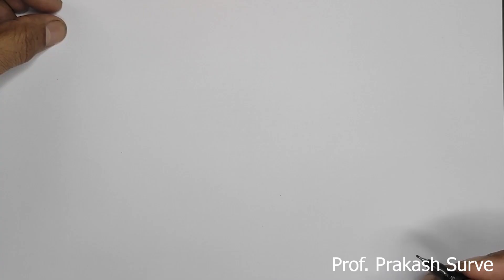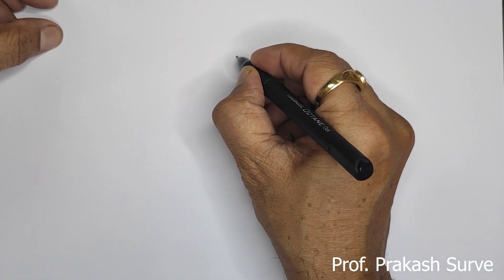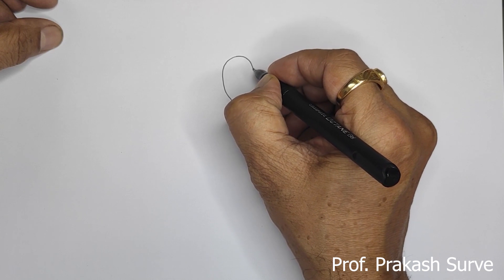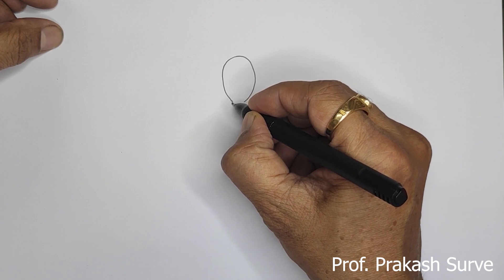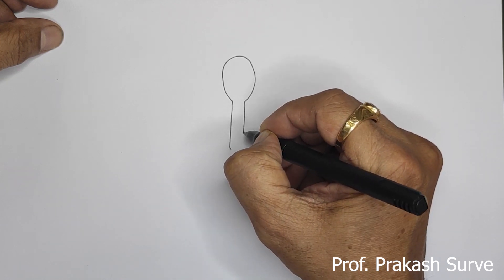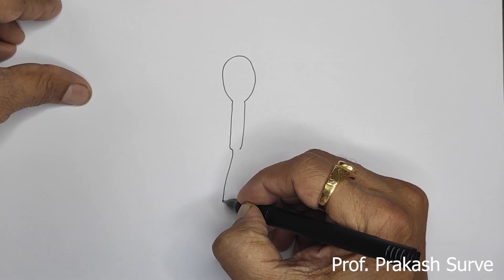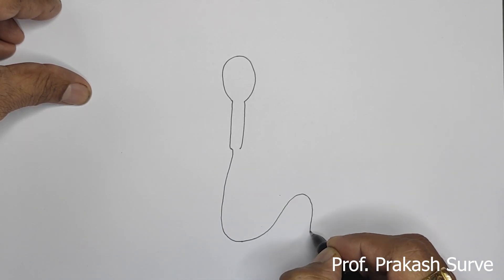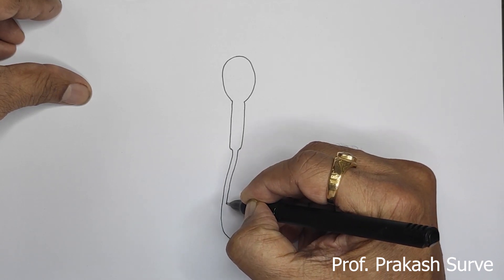Welcome dear students. Today we will see about the structure of sperm — a very easy diagram. First we will draw the head of the sperm, then afterwards the middle piece, and then we will draw the tail.